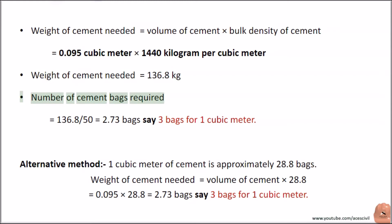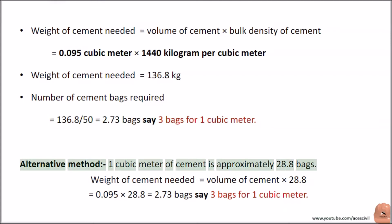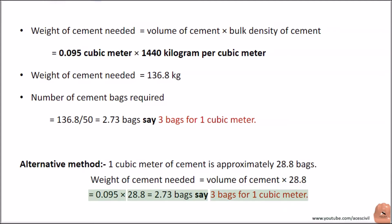Number of cement bags required = 136.8 / 50 = 2.73 bags, say 3 bags for 1 cubic meter. Alternative method: 1 cubic meter of cement is approximately 28.8 bags. Weight of cement needed = volume of cement × 28.8 = 0.095 × 28.8 = 2.73 bags, say 3 bags for 1 cubic meter.